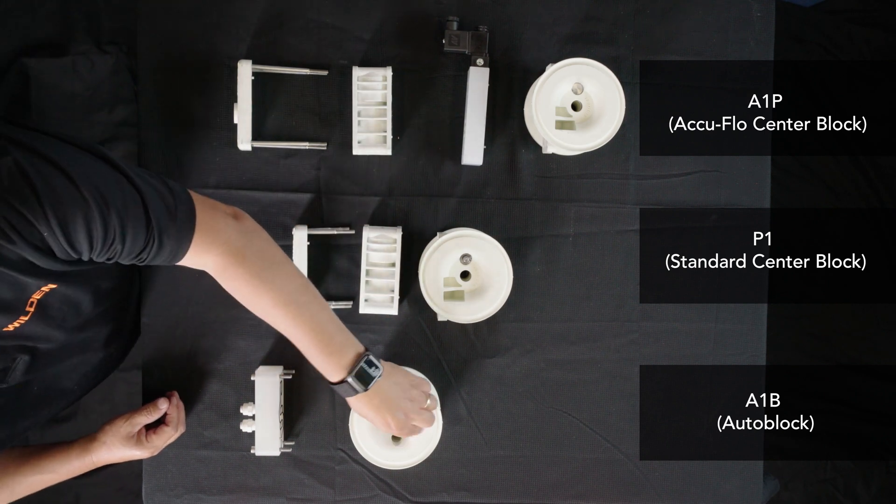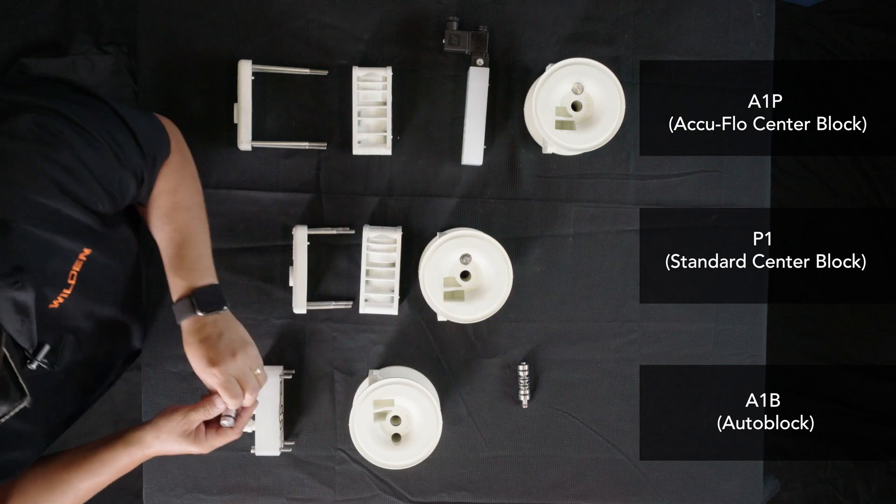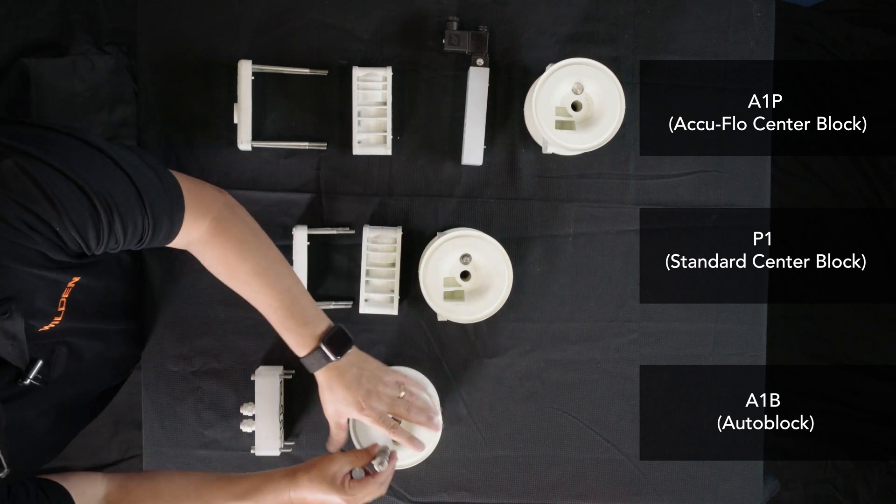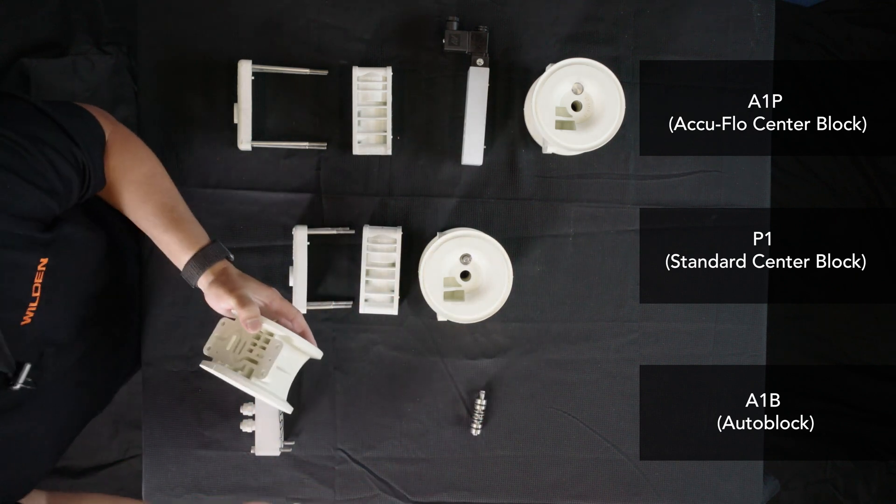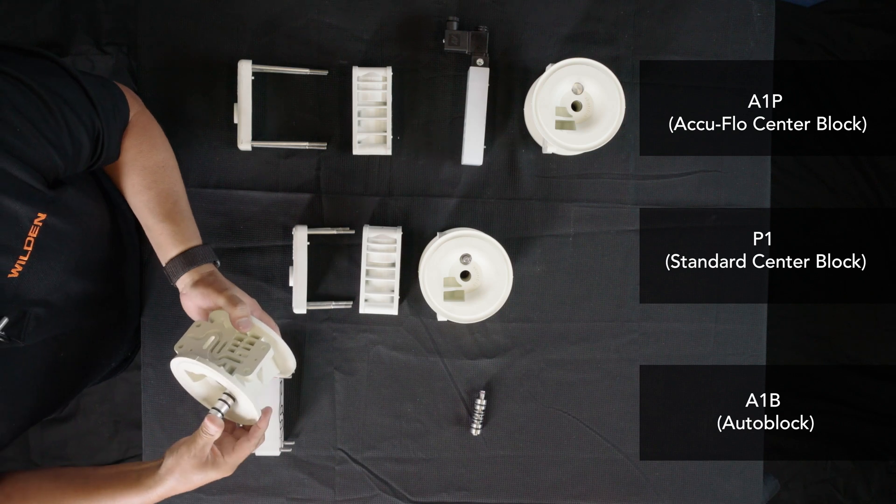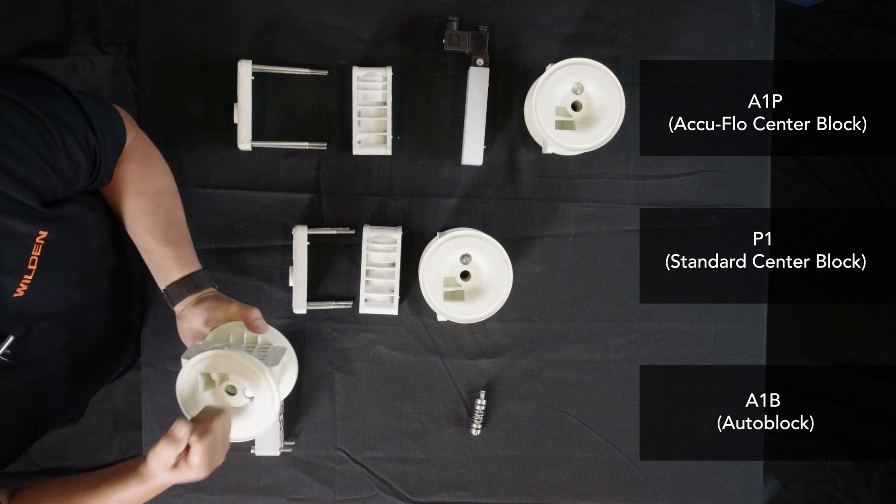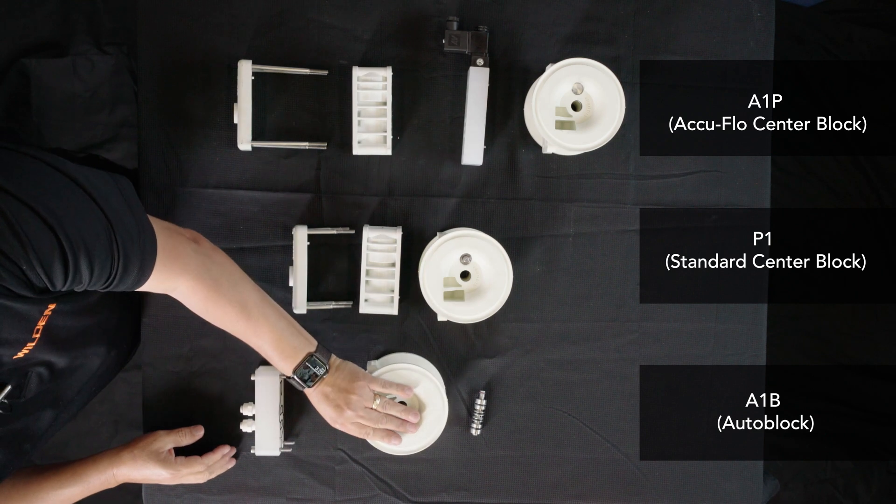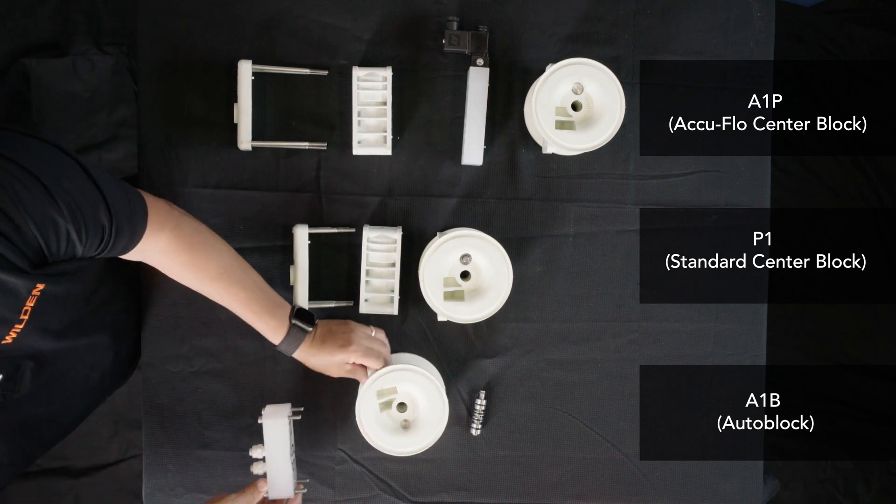So the auto block pump, in lieu of a pilot spool assembly, you would remove the pilot spool assembly from the center section, pull that out, replace it with a plug. That simply goes in the center section. You put a snap ring in there to secure it in place, and you hook up the auto block to it.